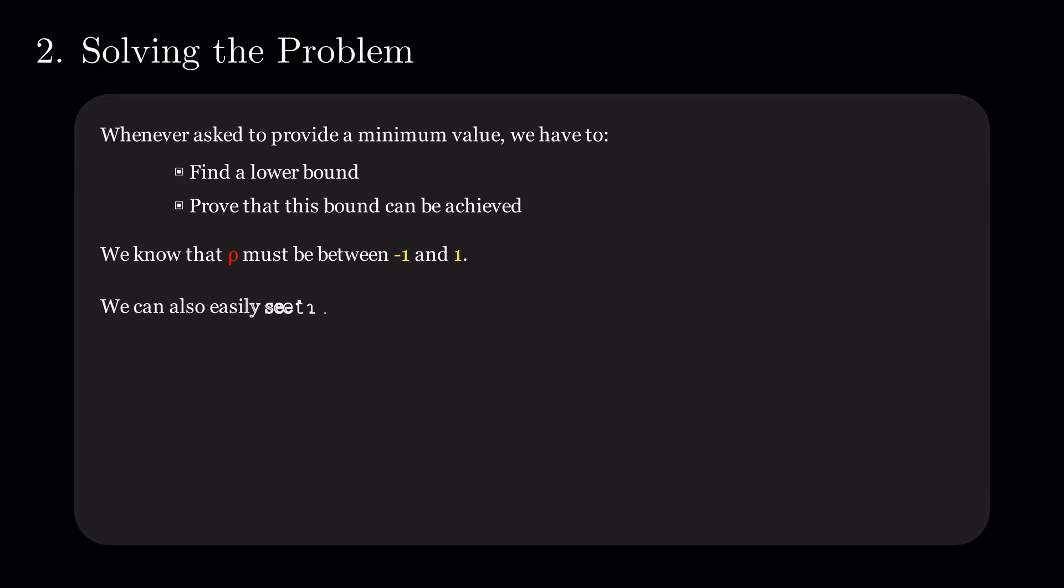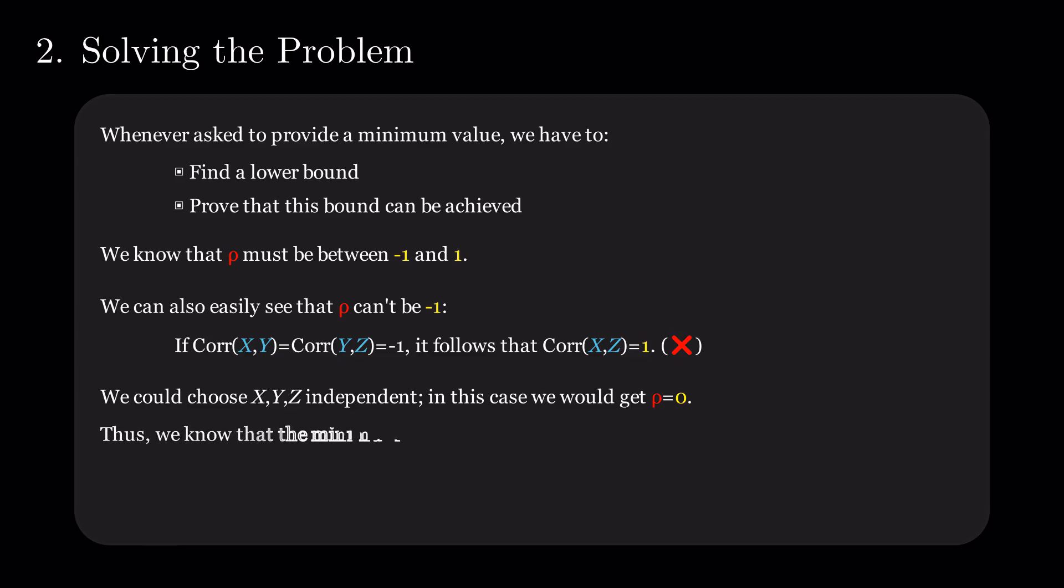The loosest bounds for rho are minus 1 and 1. We can easily see that rho can be equal to minus 1. If the pairs xy and yz have a correlation of minus 1, the correlation between x and z must be 1. We could also choose xy and z independent, in which case rho would be 0. So, our minimal value is in the interval open at minus 1 between minus 1 and 0.